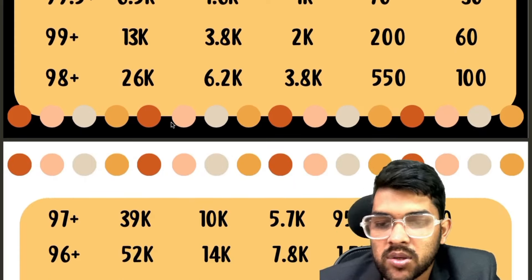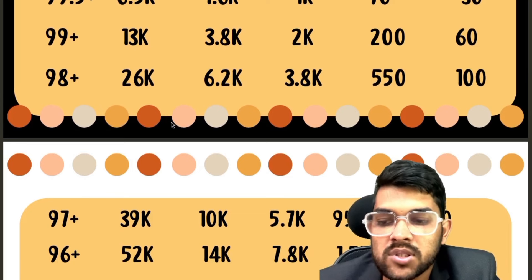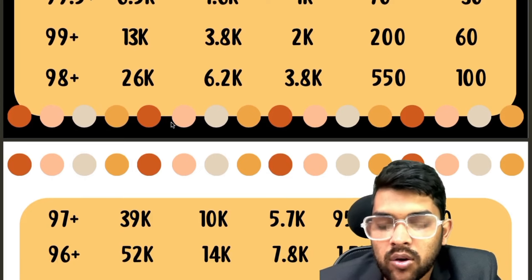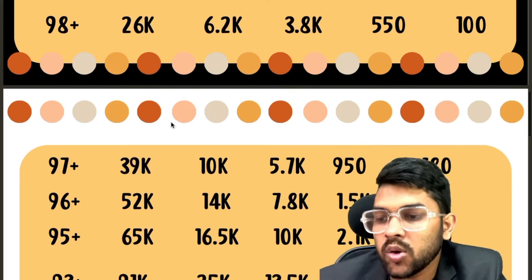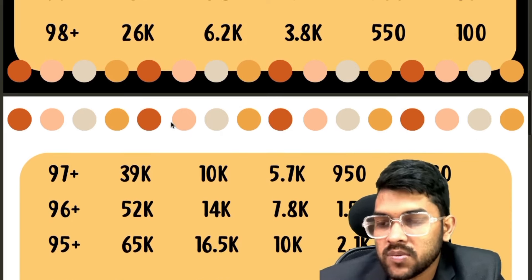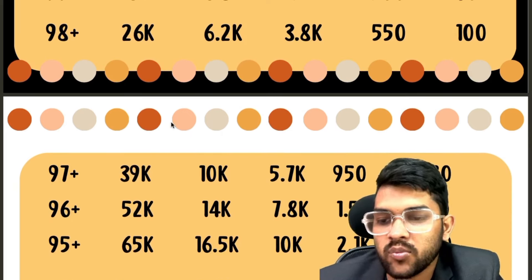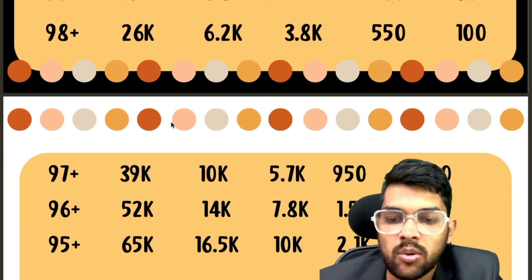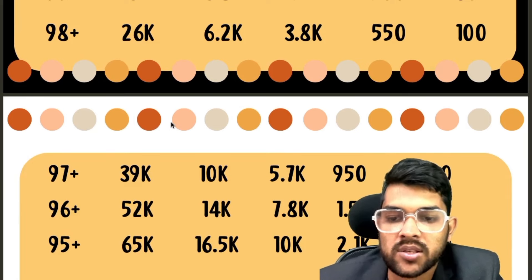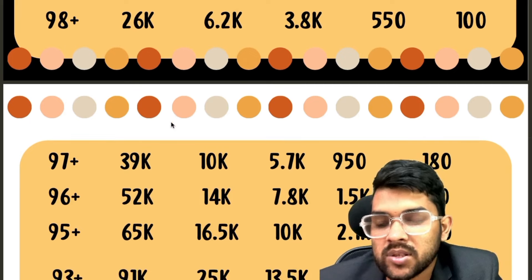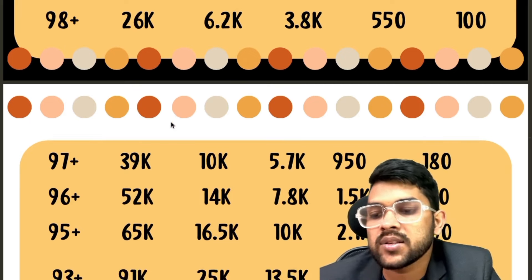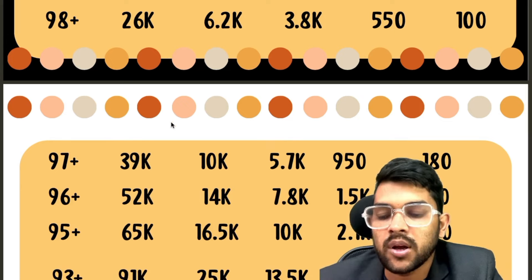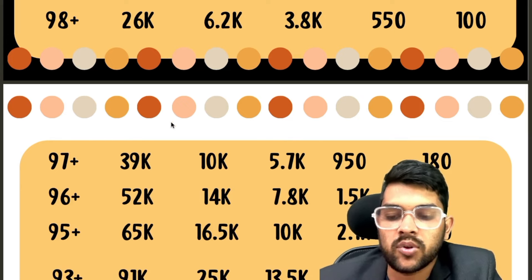For 97 percentile: General 39000, OBC 10000, EWS 5700, SC 950, ST 180. For 96 percentile: General 52000, OBC 14000, EWS 7800, SC 1500, ST 340.